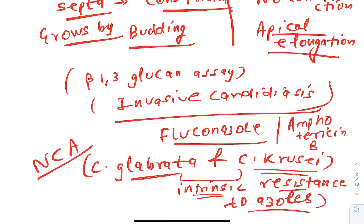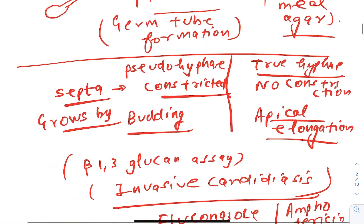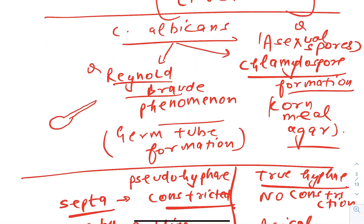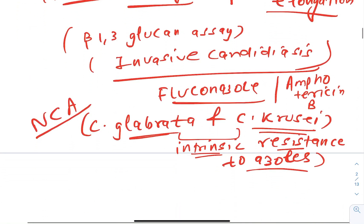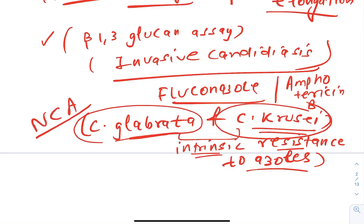To summarize: we discussed Candida auris and why it is important today; the difference between hyphae and pseudo-hyphae; Candida albicans causing most candidiasis with Reynolds-Braude phenomenon and chlamydospore formation on corn meal agar; beta-1,3-glucan assay for invasive candidiasis; and Candida glabrata and krusei with intrinsic azole resistance. I will continue discussing JIPMER questions one by one.